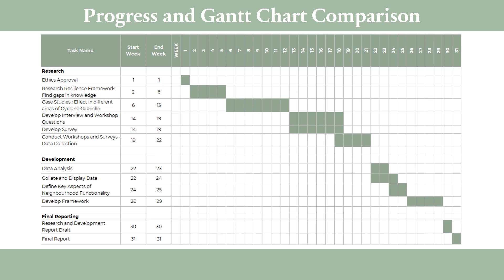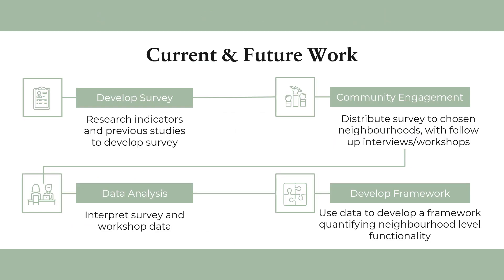The Gantt chart is on track to currently develop the survey. Resilience frameworks have been researched to identify gaps as expected. However, only brief case studies were done to select the appropriate neighbourhoods for the study. Currently, the survey is being developed to be sent to community members. A representative sample of case study neighbourhoods are selected and indicators are researched to develop the questions.